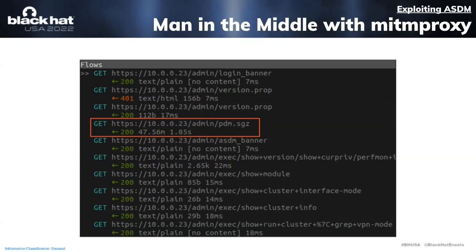That's not theoretical. Pictured here is a screenshot of me using a popular tool, man-in-the-middle proxy, on the ASDM client. I used the default man-in-the-middle proxy certificate and the ASDM client gave no indication it was under attack. This should give me, the attacker, full control over the ASA, but I might also be able to gain control over the administrator system as well.